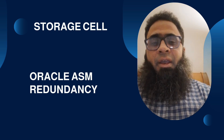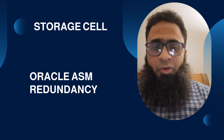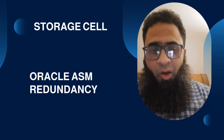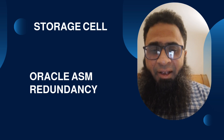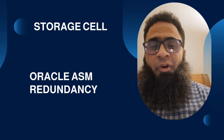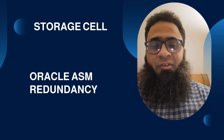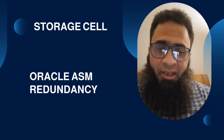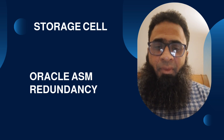If you know about Oracle ASM, in Oracle ASM we have three types of redundancy: the first one is normal, the second one is high, and the last one is external.